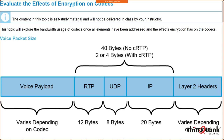Looking at the PDU structure — the packet carrying the voice payload: you've got your Layer 2 header (14 bytes for Ethernet, or 18 bytes including frame check sequence), a 20-byte IP header, an 8-byte UDP header, a 12-byte RTP header, and then the voice payload. The voice payload size changes based on codec type. Without compressed RTP, that's 40 bytes of overhead; with RTP header compression, it's 2 to 4 bytes.